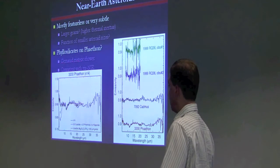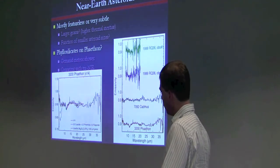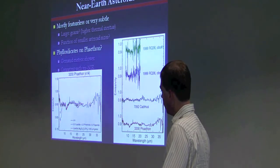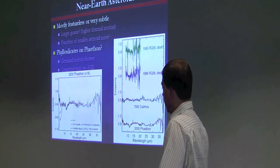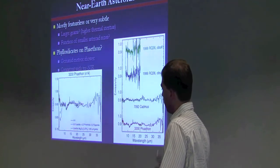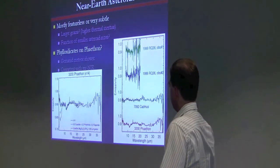We think we're seeing a feature due to phyllosilicates on the surface of Phaethon, which is the parent body of the Geminid meteor shower. This dip here coincides well with a feature in certain types of phyllosilicates. And that interpretation is consistent with recent work done in the visible near-infrared also. But most other near-Earth asteroids are just pretty featureless.